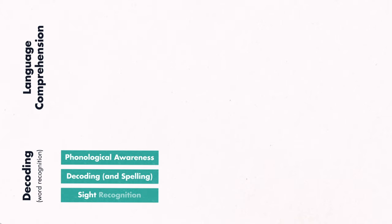The decoding subskills are each assigned a strand in the rope: phonological awareness, decoding and spelling, and sight recognition.